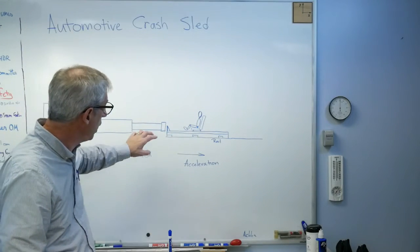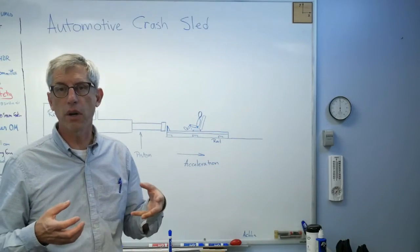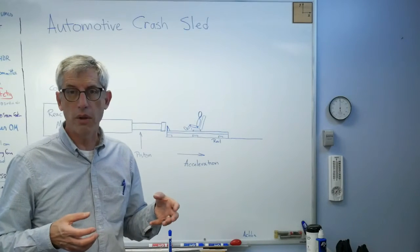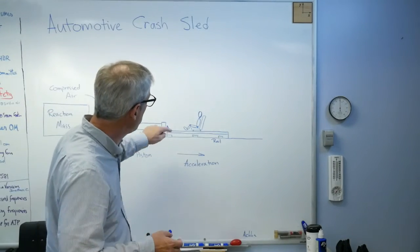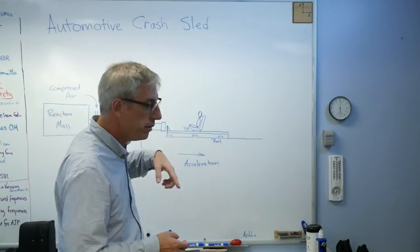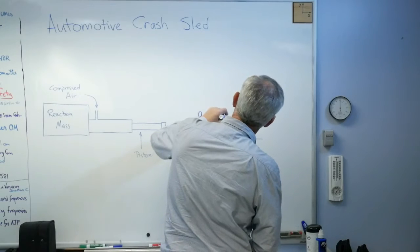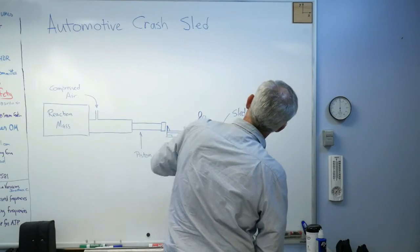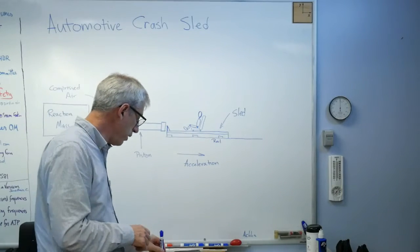This is the sled. I've drawn it in concept here, but it's a steel structure that rides on two rails - two really, really flat, straight rails. You put whatever it is you want to test on the sled. I should label this in case you're going to get a screenshot - that's the sled. That's why the technicians who ran the sled where I used to work were called the sled dogs.